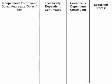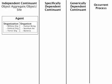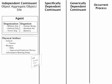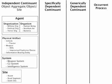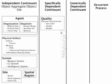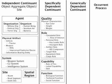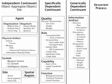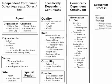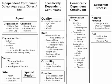This graphic depicts the four major categories of the Basic Formal Ontology. By populating these categories with sample content, we can see the comprehensiveness of the BFO. Independent continuants include agents, physical artifacts, systems, sites, and spatial regions. Specifically dependent continuants include qualities, roles, capabilities, and functions. Generically dependent continuants include directives, descriptions, designations, measurement data, and other information artifacts. Occurrences include natural processes, human acts, and other events.